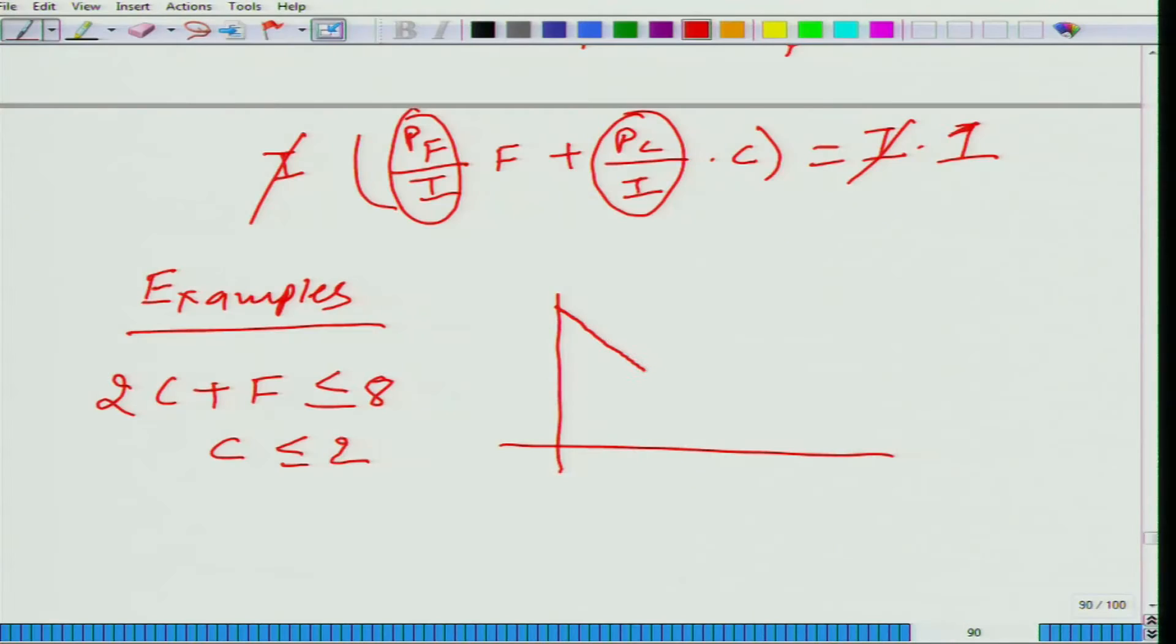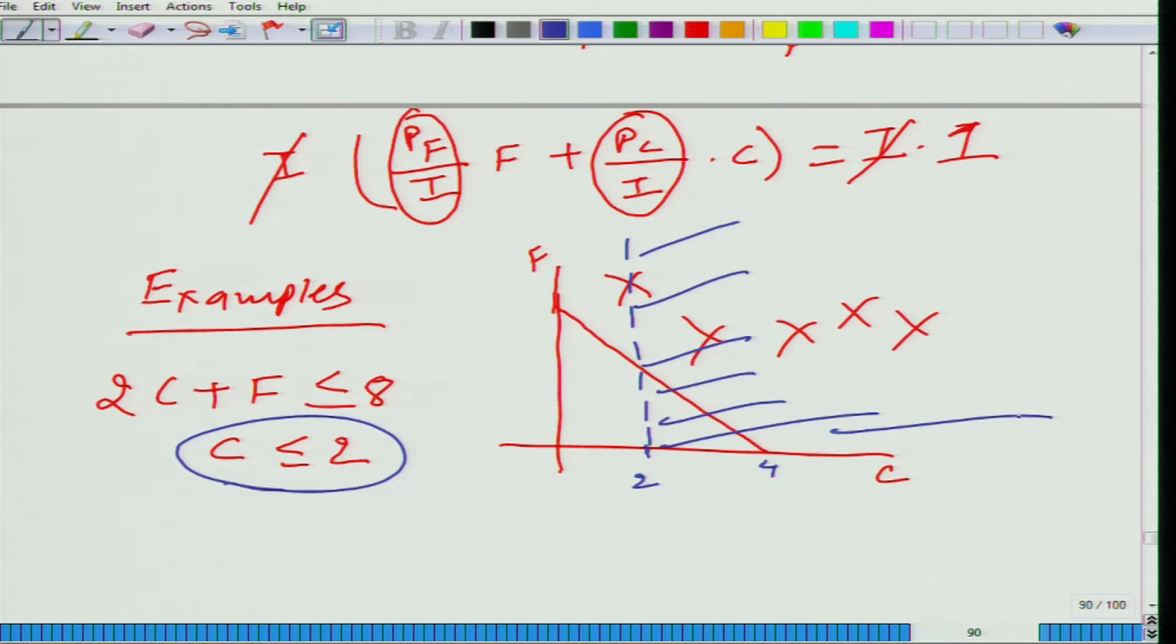Now, let us see what will happen to the budget set. This is f, this is c. We have to cut out the trapezium after 2. So, what we are saying is this area is not possible. And now, what this constraint is saying - this is 4, if this is 2, this area is again not possible. So, the new budget set is given by this.